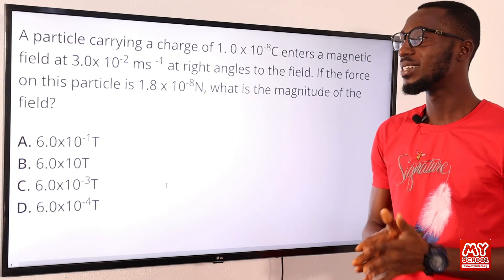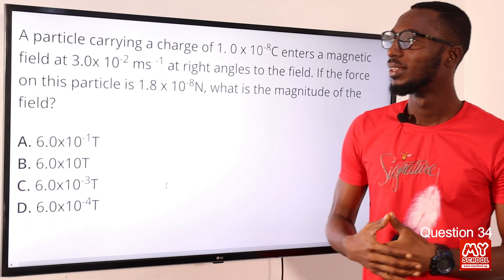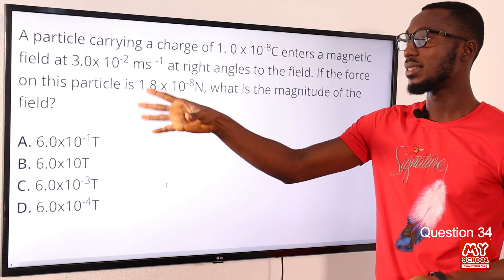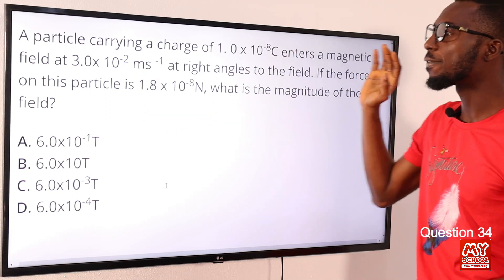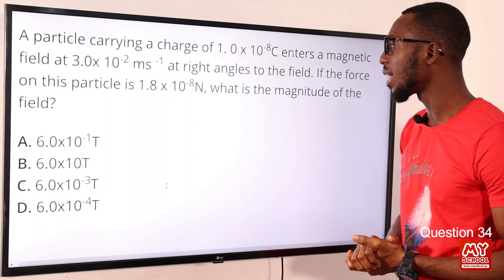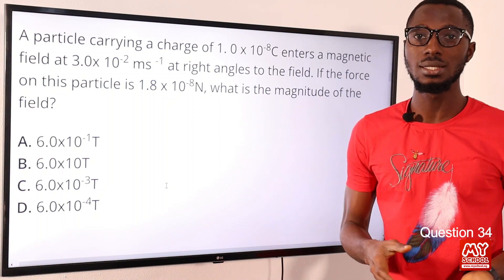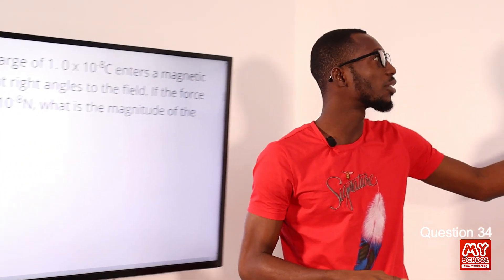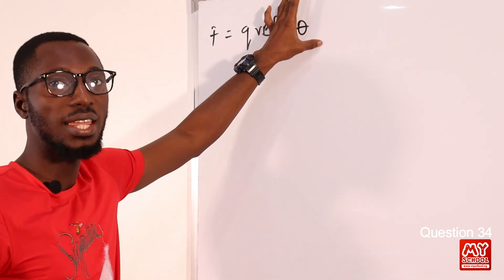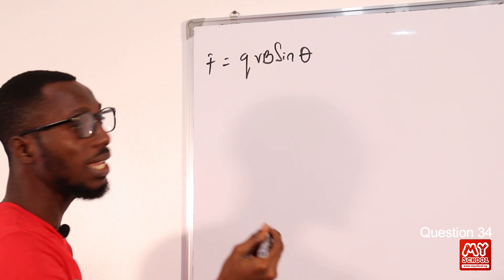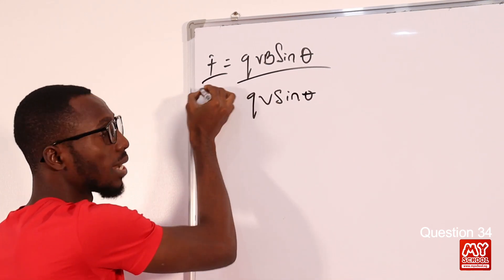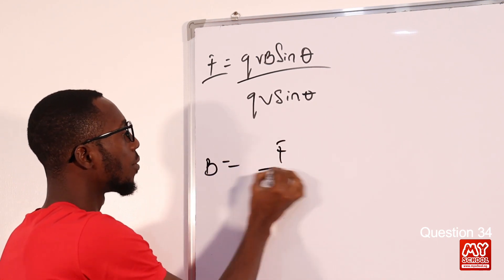Question 34: A particle carrying a charge of 1.0 × 10⁻⁸ coulombs enters a magnetic field at right angles. The force on the particle is 1.8 × 10⁻⁸ N. We need to find the magnitude of the magnetic flux density B. The formula is: F = qvB sinθ. Making B the subject gives B = F / (qv sinθ).